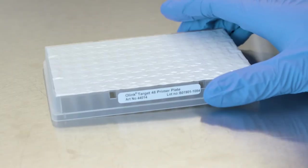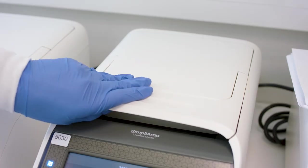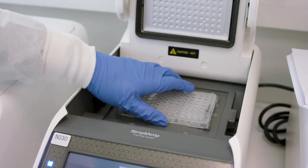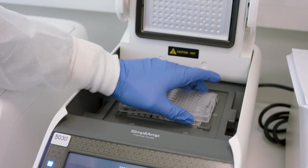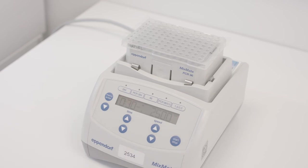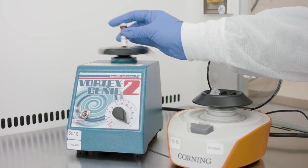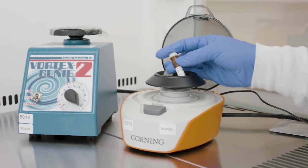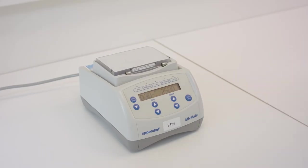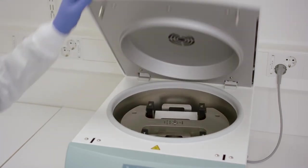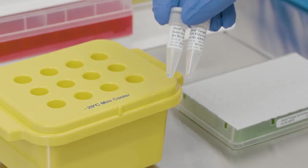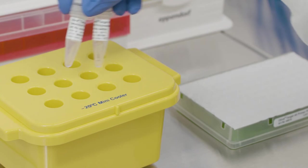Thaw the primer plate. Remove the incubation plate containing the PCR product from the PCR instrument. Vortex and spin down the content. Thaw the detection solution and vortex and spin down the detection solution and primer plate. Bring out the detection enzyme and PCR polymerase and remember to place them on a freezing block.